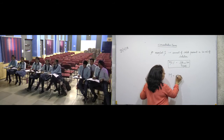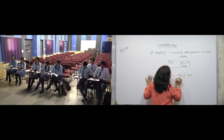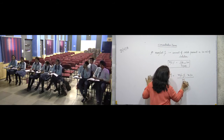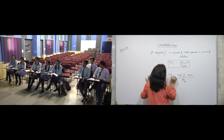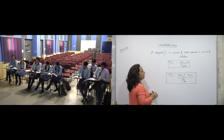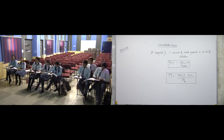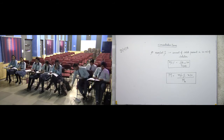Molarity is equal to mass by volume percentage multiplied by 10, divided by molecular mass. That relationship defines how molarity connects to mass by volume percentage.